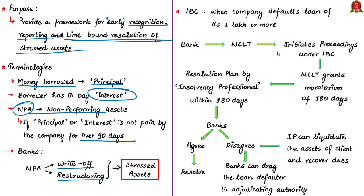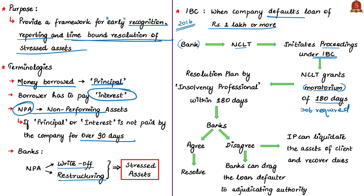The Insolvency and Bankruptcy Code was introduced in 2016. As per IBC, when a company defaults on a loan of 1 lakh or more, banks or creditors can approach the National Company Law Tribunal to initiate proceedings. NCLT will grant a moratorium of 180 days — roughly 6 months — so creditors can come up with a uniform resolution plan by working together. During this moratorium, the borrower is not required to make any payment. A single creditor cannot take actions unilaterally if a person has borrowed from 5 banks.